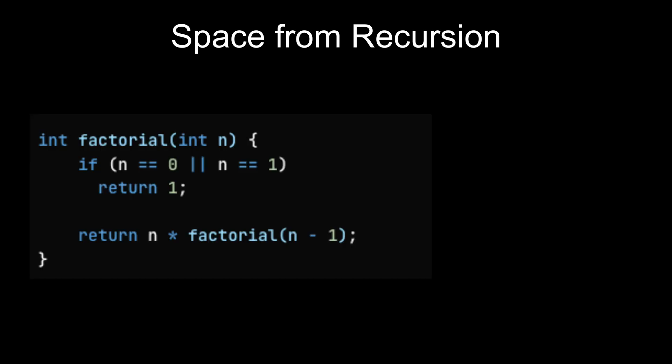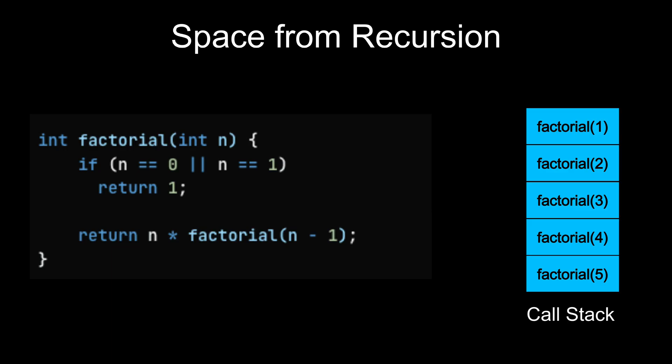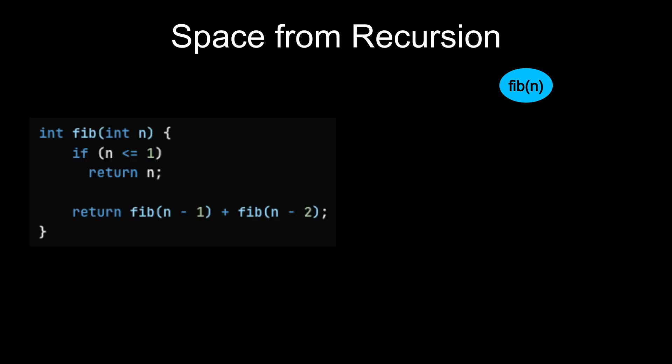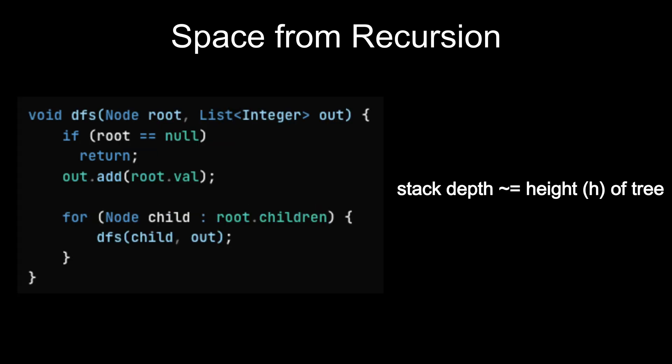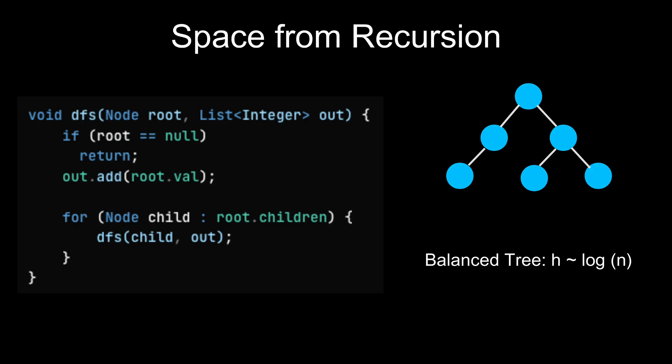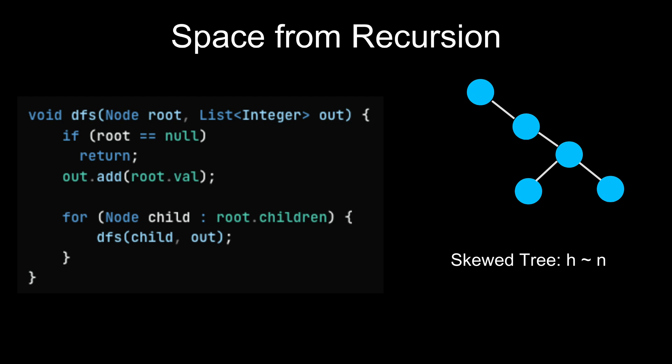And next, space from recursion. Space complexity isn't only about the extra data structures you create. Recursion also consumes memory through the call stack and this often goes unnoticed. Every recursive call adds a new frame to the stack until the function returns. The naive recursive Fibonacci solution branches twice for each call. It takes O(2^n) but still uses O(n) because at most N calls are active on the stack at once. For depth first search on a tree, the stack depth is proportional to the height h of the tree. In a balanced tree, h is close to log n so space complexity is O(log n). In the worst case, for example a skewed tree, h is close to N so space becomes O(n).